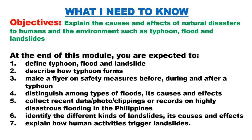Objectives: Explain the causes and effects of natural disasters to humans and the environment, such as typhoon, flood, and landslides. At the end of this module, you are expected to: 1. Define typhoon, flood, and landslide. 2. Describe how a typhoon forms. 3. Make a flyer on safety measures before, during, and after a typhoon. 4. Distinguish among types of floods, their causes and effects. 5. Collect recent data, photos, or clippings on highly disastrous flooding in the Philippines. 6. Identify the different kinds of landslides, their causes and effects. 7. Explain how human activities trigger landslides.